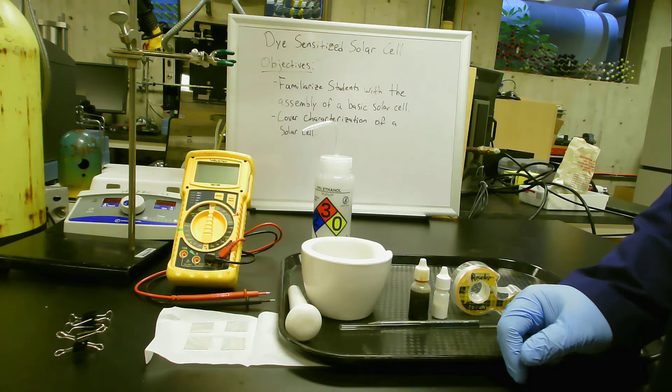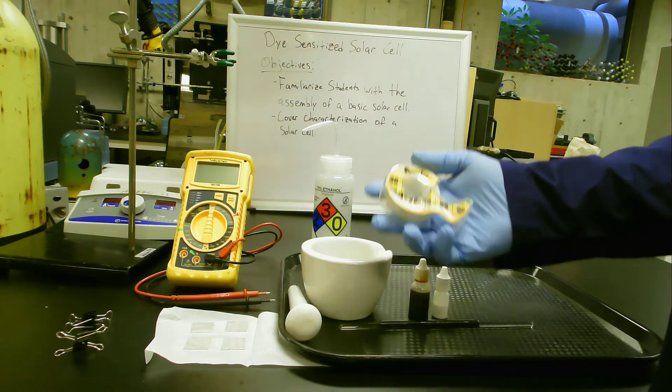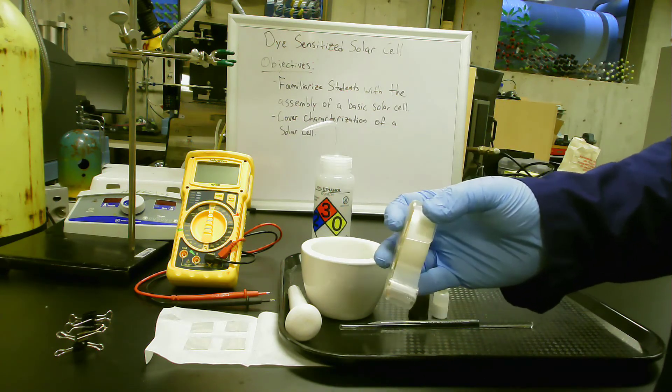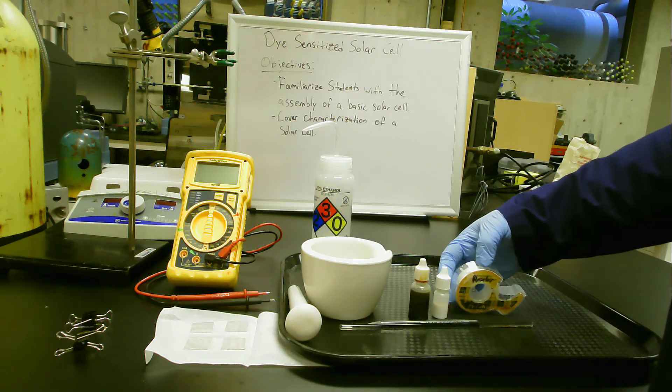We have some basic scotch tape. The scotch tape—we will describe more in detail—is used to control the thickness of our coating, our single coating of titanium dioxide.